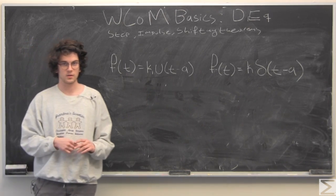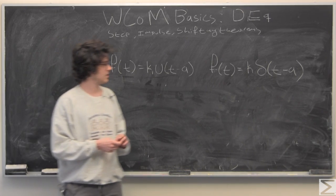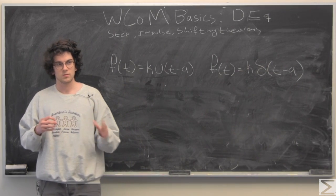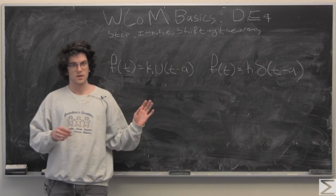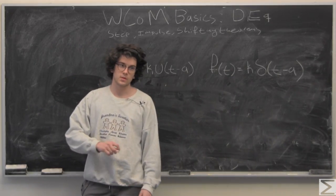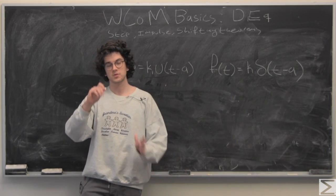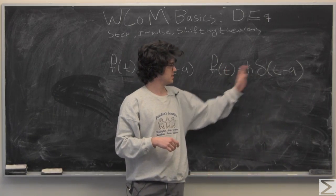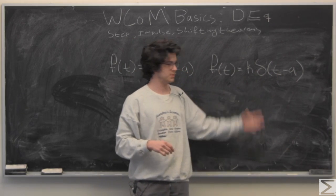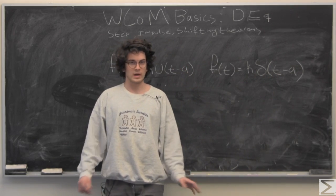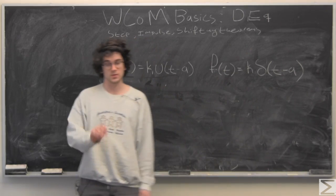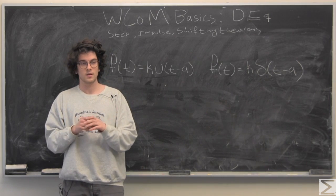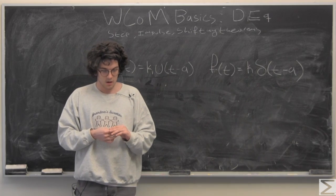We will get to how to use that in computations in a second. I just want to go over the impulse function, which, simply put again, means that you're at 0, and then at some time, you have an instant of force with some amplitude. So this is how you would write that. At time a, you have an amplitude of k, and all else, you have an amplitude of 0. By amplitude, I just mean distance from the x-axis.